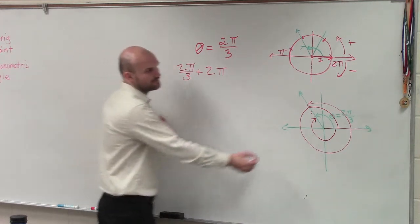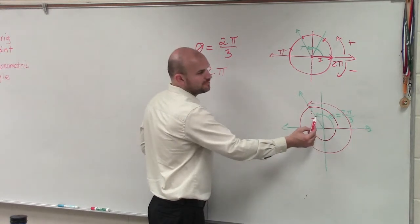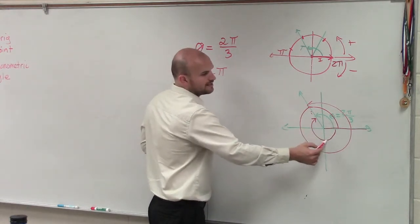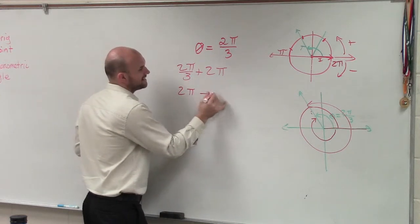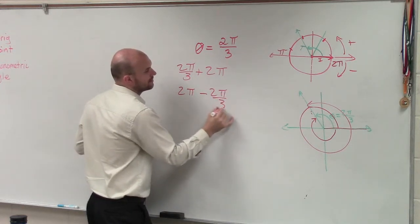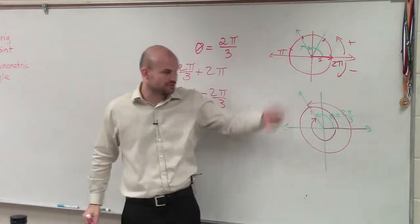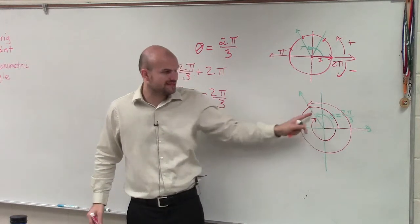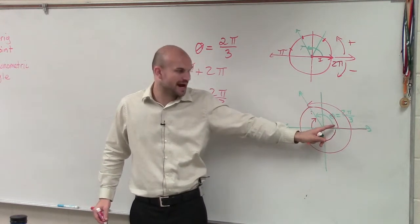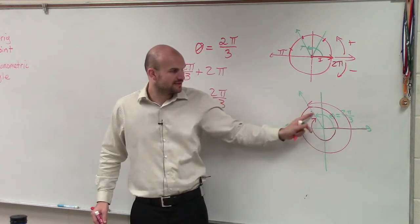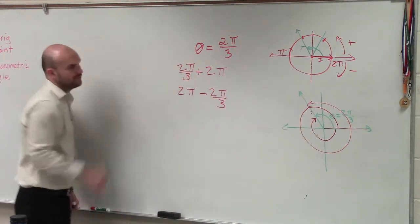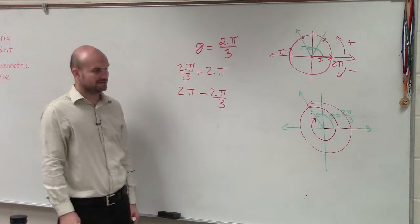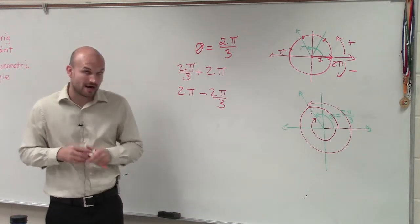Or I could also, if from here to here is 2 pi over 3, well, from here to here is going to be 2 pi minus 2 pi over 3. If all the way around a circle is 2 pi, the only thing I'm missing is this chunk. So 2 pi minus this is just going to give me this angle. So therefore, these are going to be my two coterminal angles.